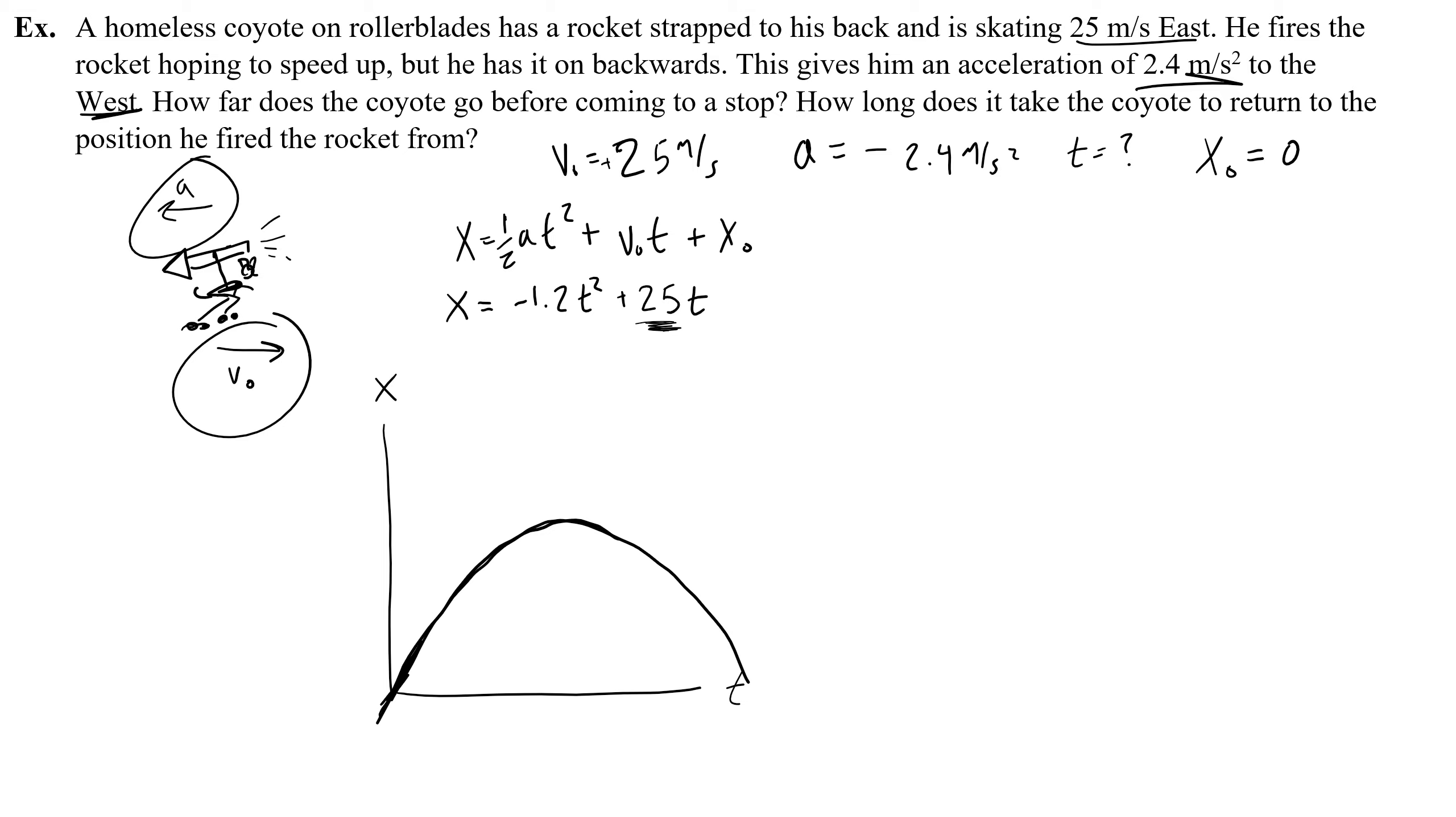How far does the coyote go before coming to a stop? Well, if I can graph this equation, I know that the coyote will come to a stop when the slope on this graph is 0. And that's because the slope on a position versus time graph is velocity. Well that feature of a quadratic or a curving graph is something that's called a maximum. And if you graph this equation, your calculator can give you the exact value of that maximum, both the time and the position. So let's do that.